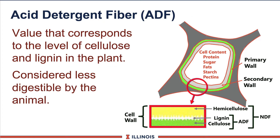Next comes acid detergent fiber, ADF, and that basically corresponds to the cellulose and lignin part of the plant. If you looked at that schematic, that would be the green and white areas, and that's important because it impacts digestibility of the feed.